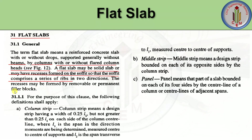The recesses may be formed by removable or permanent filler blocks. In Clause 31.1.1, column strip is defined: a column strip means a design strip having a width of 0.25·l2 but not greater than 0.25·l1 on each side of the column center line, where l1 is the span in the direction the moment is being determined, measured center to center of supports, and l2 is the span transverse to l1, measured center to center of supports.